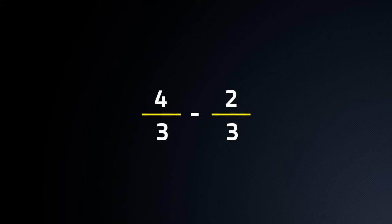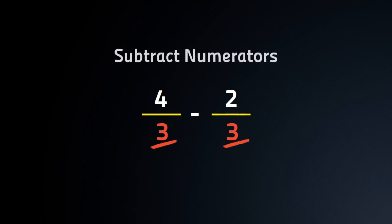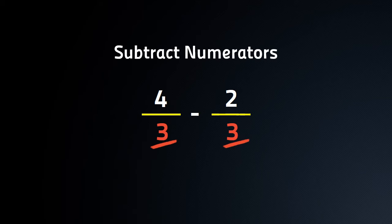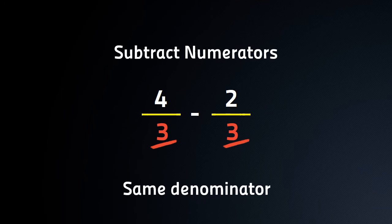Let's consider another example. We have 4 by 3 and we have to subtract 2 by 3 from it. As we can see, denominators of 4 by 3 and 2 by 3 are same, i.e. 3. In this type of problem, we subtract numerators and keep denominators same.